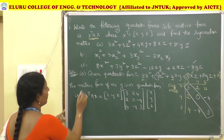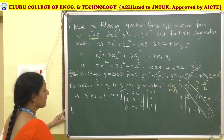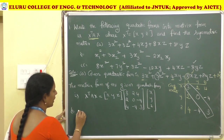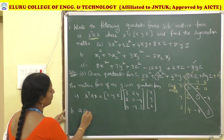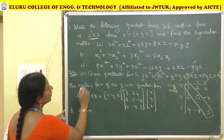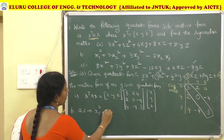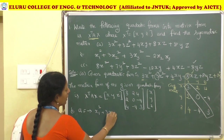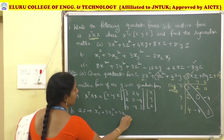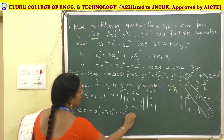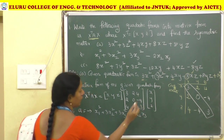Now, the second problem. The given quadratic form is x1² + 3x2² + 3x3² − 2x2x3. The variables are x1, x2, x3.